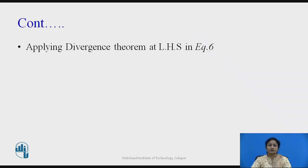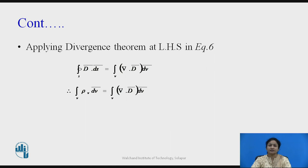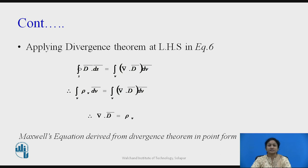Now let us apply the divergence theorem to the LHS in equation 6. When we apply the divergence theorem, D·dS will be replaced by del dot D-bar over the volume. When we substitute that and equate both sides over the volume, it reduces to del dot D-bar equals rho_v, which is Maxwell's equation derived from the divergence theorem in point form.